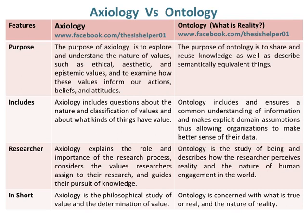Axiology includes questions about the nature and classification of values and about what kinds of things have value. Whereas, ontology includes and ensures a common understanding of information and makes explicit domain assumptions, thus allowing organizations to make better sense of the data.